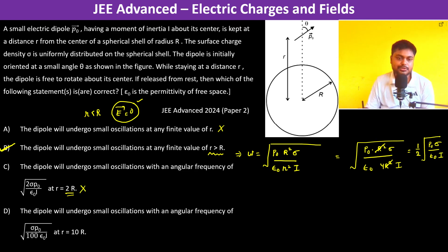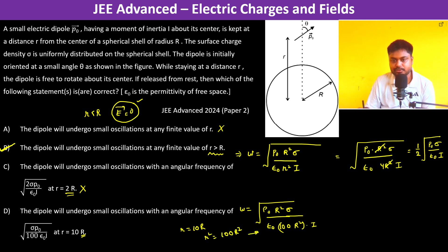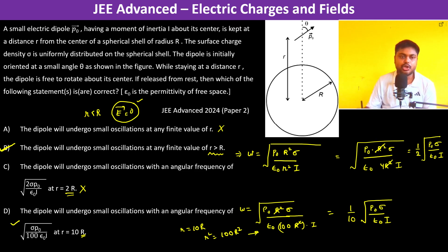For option D, substitute r = 10R. So ω = √(p₀R²σ / (ε₀ · (10R)² · I)) = √(p₀R²σ / (ε₀ · 100R² · I)). The R² terms cancel, giving ω = (1/10)√(p₀σ / (ε₀I)), which exactly matches option D. Therefore, the correct options are B and D.